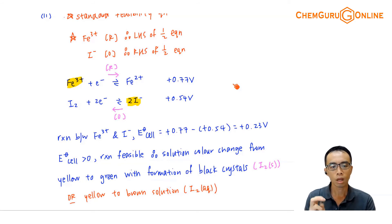But for feasibility question, only iron 3 plus is present, iron 2 plus is not there. So this one can only undergo reduction, it cannot be oxidized. And only I minus is present, I2 is not present. So this one can only undergo oxidation, it cannot be reduced. So the reaction is fixed by the question.